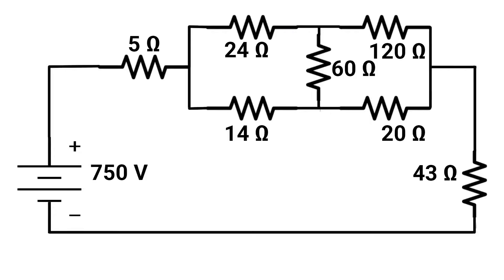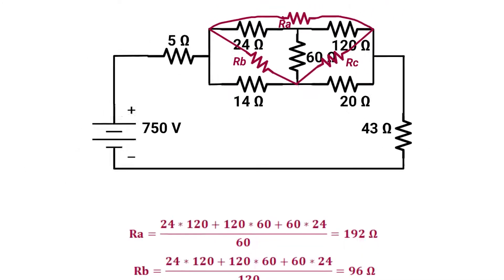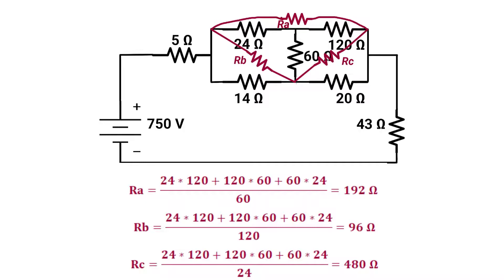Back to our example — these three resistors are in star configuration, so we can convert them into delta configuration. Ra, Rb, and Rc are calculated using the star-to-delta formulas. Rc will equal 24 times 120 plus 120 times 60 plus 60 times 24, over 24, which will equal 480 ohm.